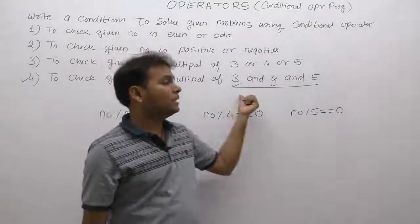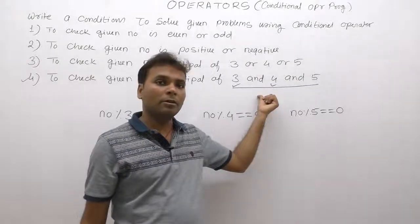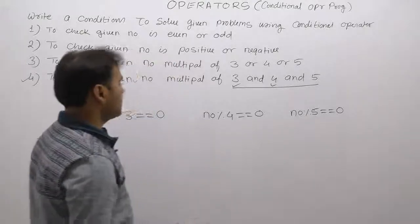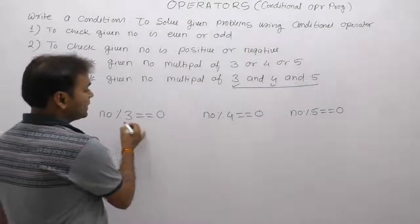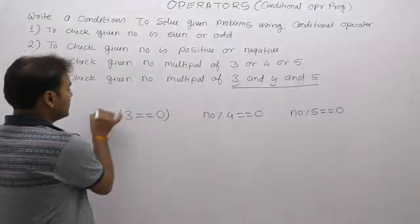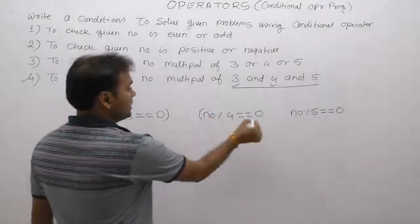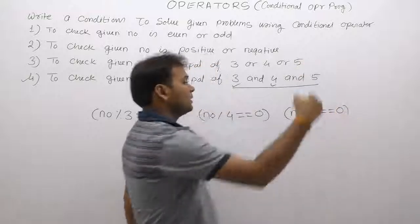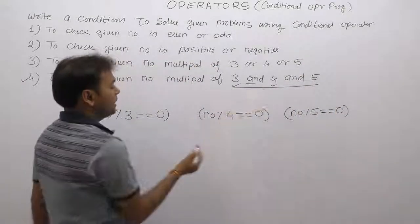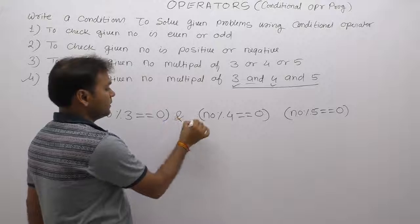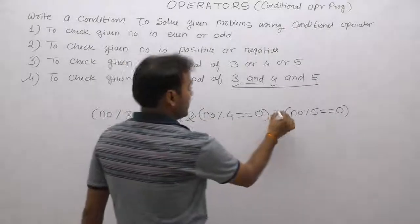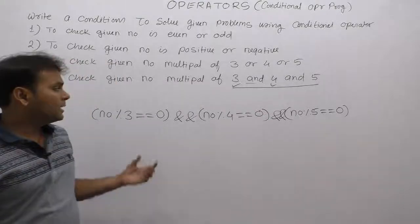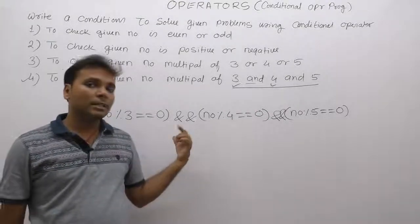Number is multiple of three, as well as multiple of four, as well as multiple of five — all conditions combined using logical AND. In case of logical AND, if any one condition is false, the result is false.